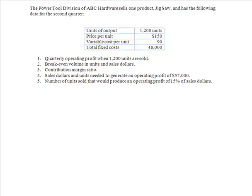I've got the Power Tool Division of ABC Hardware that sells Jigsaw with the following data: 1,200 units at a price of $150 per unit. We've separated out variable cost per unit and then we have total fixed costs. Remember those total fixed costs are fixed across all production levels. First I'm going to calculate the quarterly operating profit if I sell those 1,200 units.